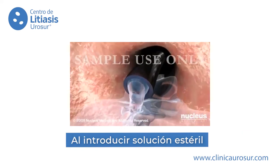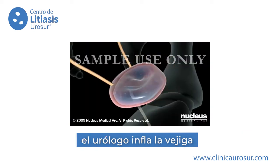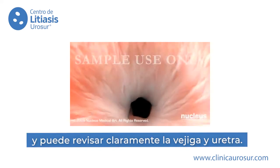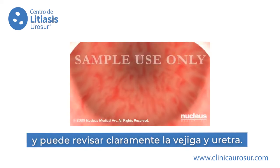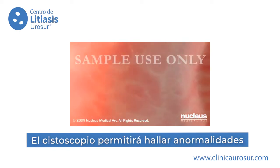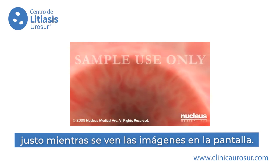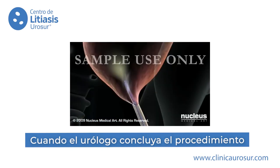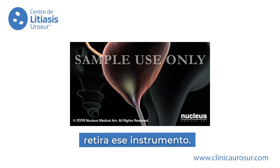By introducing a clear, sterile solution, your doctor will expand the bladder. He or she will carefully examine the lining of the bladder and urethra by looking through the eyepiece on the cystoscope, as well as by viewing images projected onto the video screen. When your doctor is finished, the scope will be removed.